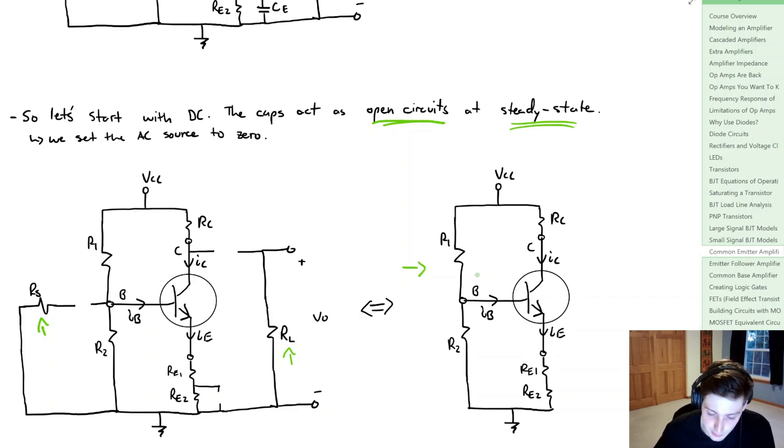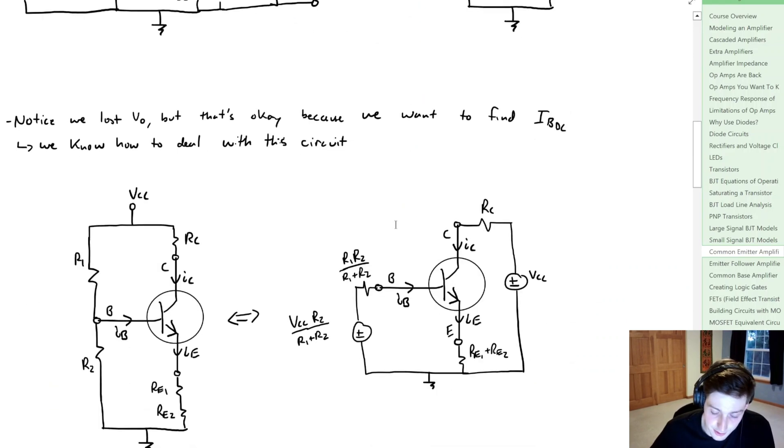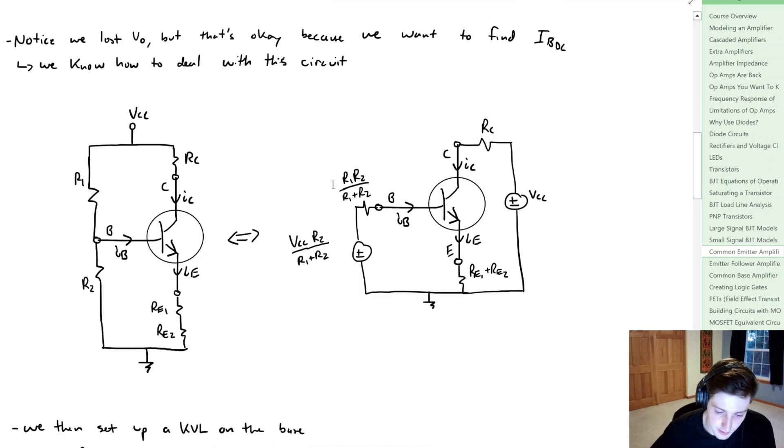Now this circuit looks quite familiar, and if we combined RE1 and RE2, so both of those emitter resistors, well if you refer back to a previous video, we know how to deal with the circuit, and it's the four resistor bias circuit. So what we did is we take a circuit like this, and we use this kind of pseudo-source transform to arrive at a circuit like this, and this is pretty easy to analyze. If this is a little bit confusing, see the previous videos, and it should make fairly good sense.